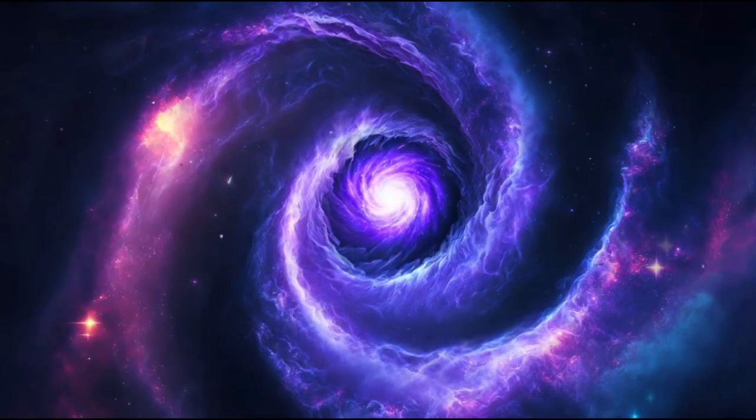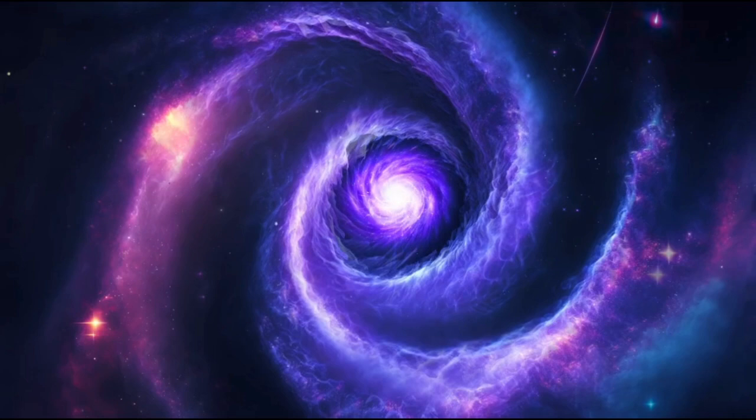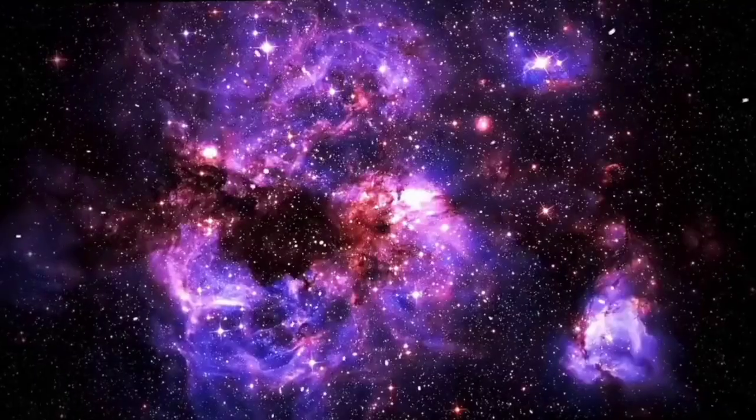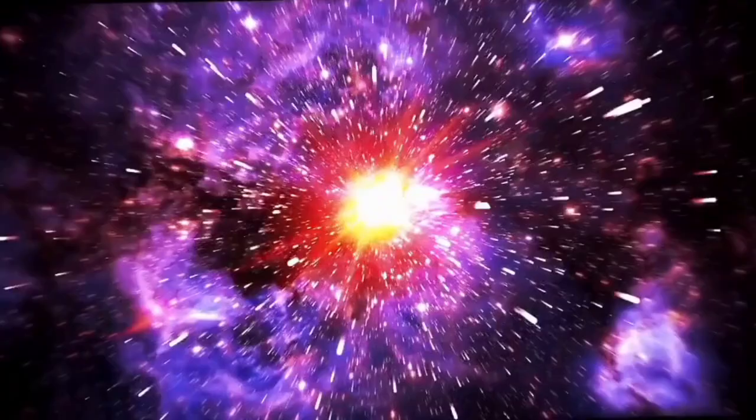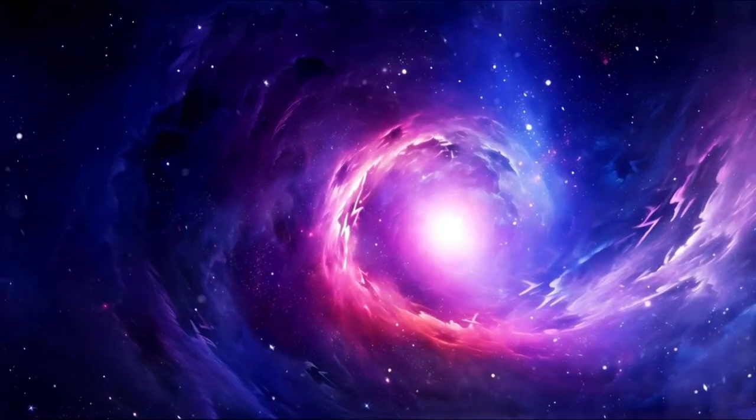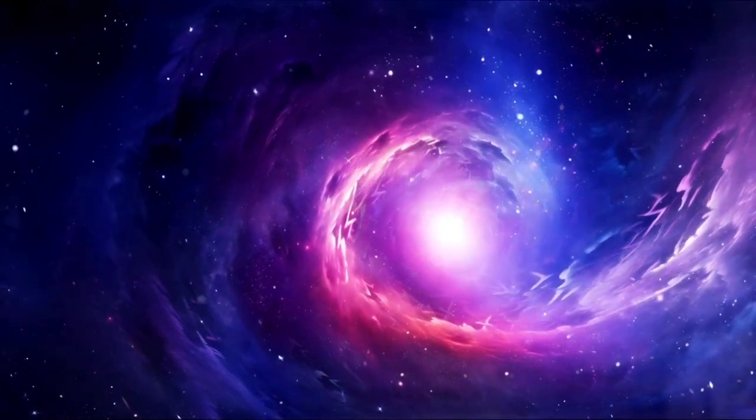Though the Sun creates coronal mass ejections, Betelgeuse's events were thousands of times more extreme, with this event flinging out material 400 billion times the mass of a typical solar eruption. This accounts for why Betelgeuse suffered a steep drop in luminosity in October 2019.